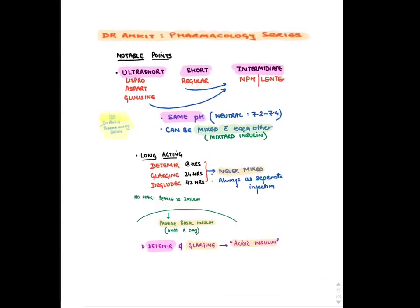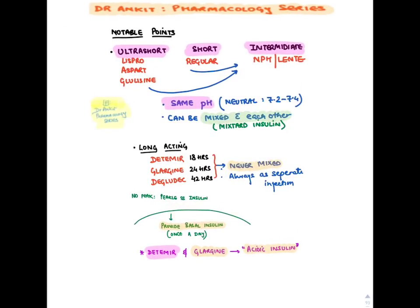Ultra-short, short, and intermediate-acting insulins are at the same pH — they can be mixed with each other and are known as mixed-charge insulins. Long-acting insulins are at a different pH and should not be mixed with other insulins. So Detemir, Glargine, and Degludec are given as separate injections. Detemir and Glargine are also known as acidic insulins, and they are so long-acting that they are known as peakless insulins — they have no peak.